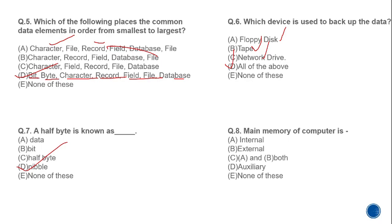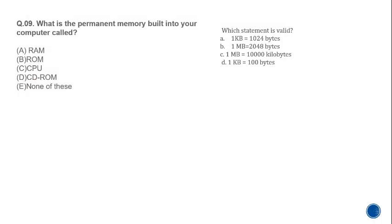MCQ 8: What is the main memory of a computer — internal memory, external memory, both, or auxiliary? The main memory is internal memory, which is RAM. It is used to run the computer and for basic processing; the computer cannot run without it. The correct answer is internal memory.